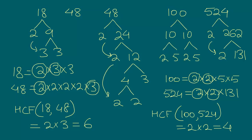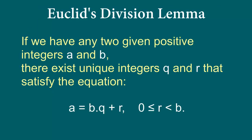Now let's take a look at how we can use Euclid's division lemma to calculate the HCF of any two given numbers. In the last video we saw what Euclid's division lemma is — I'm going to put a link to that video here. It simply states that if we have any two positive integers a and b, then there exist unique integers q and r satisfying a equals b times q plus r, where r is greater than or equal to 0 but less than b. Euclid's division lemma is essentially the way we do long division.